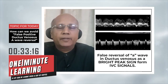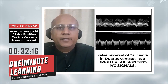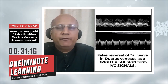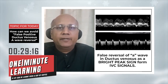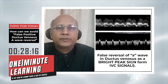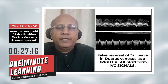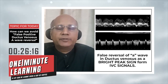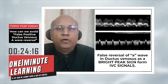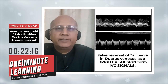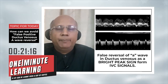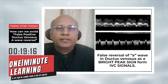Look at this Doppler. The ductus venosus waveform is gray in color and the superimposed IVC waveform is bright in color. So the normal A wave reversal of the IVC appears as an A wave reversal of the ductus venosus.